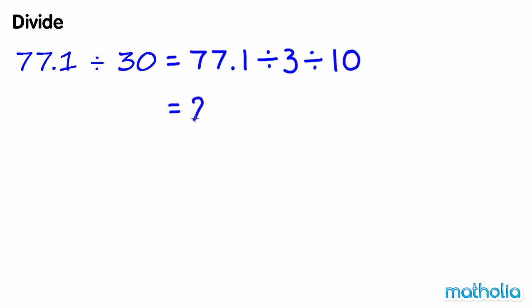Now we need to divide by 10. We can do this by shifting the decimal point one place to the left. 77.1 divided by 30 equals 2.57.